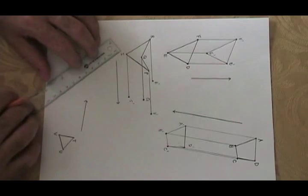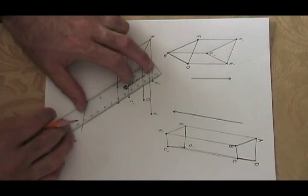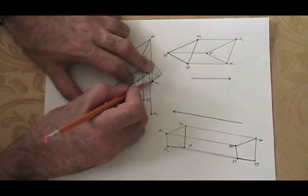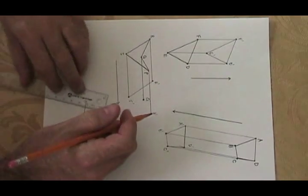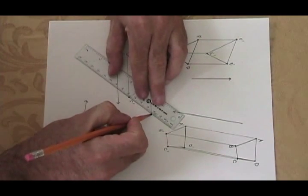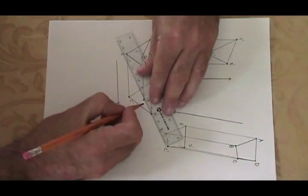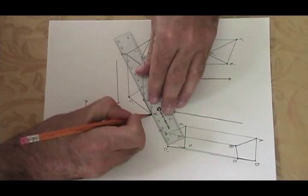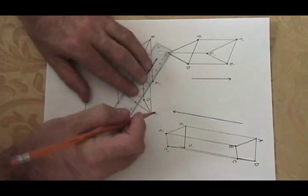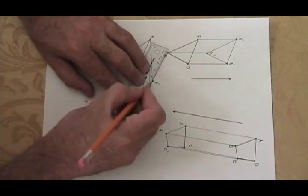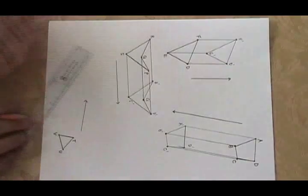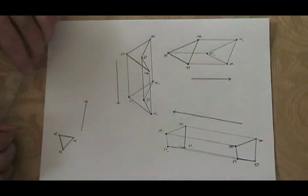Now I connect the dots: R to S, R prime to S prime, S prime to P prime, P prime to Q prime, and Q prime back to R prime. Translation of 5.8 centimeters.